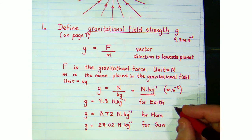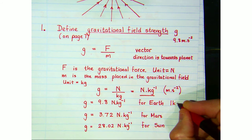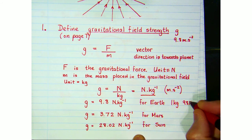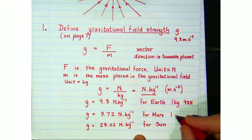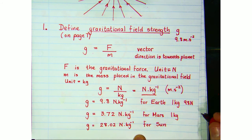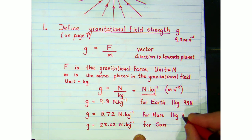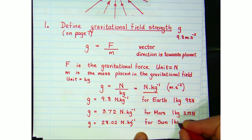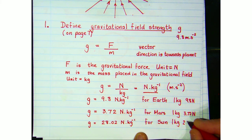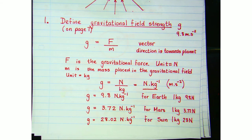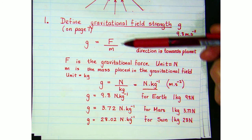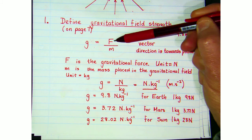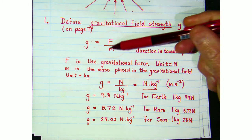So if we had a 1 kg mass on the surface of the Earth, it would experience a force of 9.8 newtons. If you took that same kilogram of mass to Mars, it would experience a gravitational force of just 3.72 newtons. If you took it to the Sun, it would experience over 28 newtons of gravitational force acting on it.